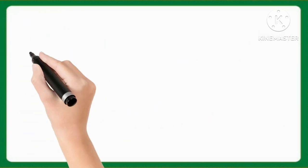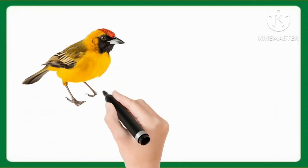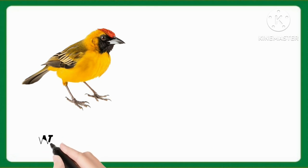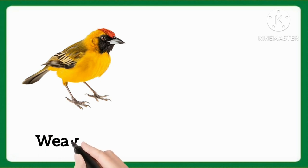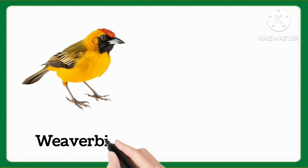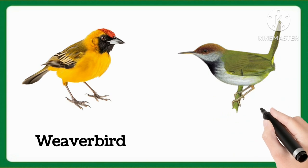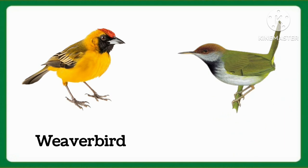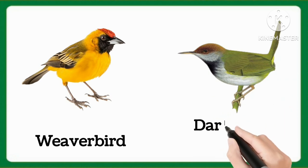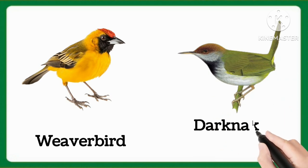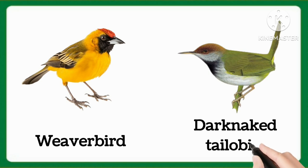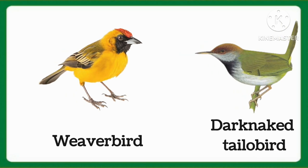And now tell me which word is this, kids? This is weaver bird. Weaver bird. And kids, tell me which word is this. This is dark-necked teno bird. Dark-necked teno bird.